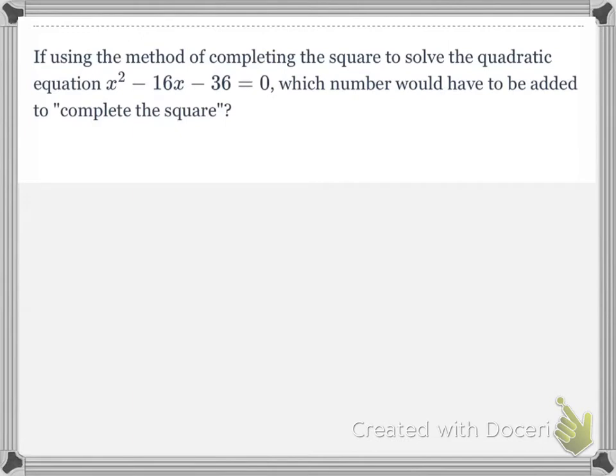All right. So here's an example of a Delta Math question. Using the method of completing the square to solve the quadratic equation x squared minus 16x minus 36 equals 0, which number would have to be added to both sides of the equation to complete the square? So all you have to do is figure out, all right, I need to divide this b coefficient by 2 and square it, and then I'm going to add that to both sides. So what is that number? Negative 16 divided by 2 is negative 8. Negative 8 squared equals 64.